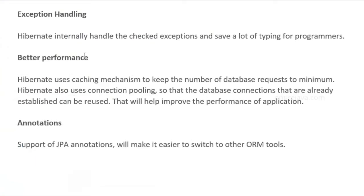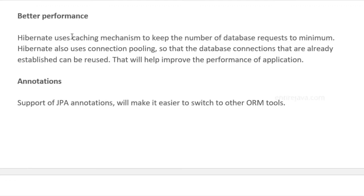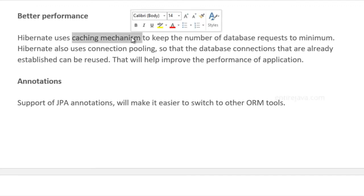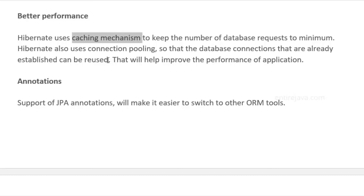With Hibernate, it incorporates mechanisms like a caching mechanism to improve performance, keeping database requests at a minimal level. Also, if a database connection already exists from a previous initialization, Hibernate will try to reuse that connection instead of creating a brand new one repeatedly. Aspects like these help improve the overall performance of the application.